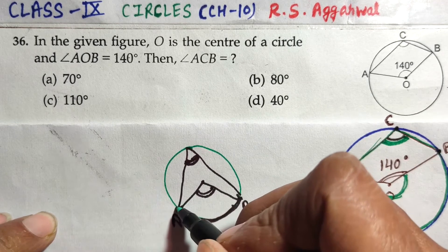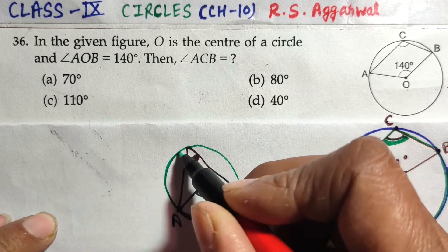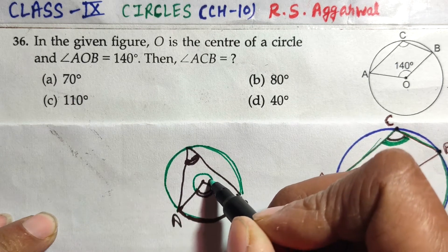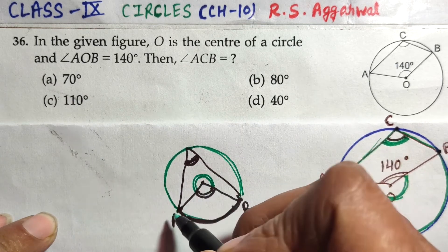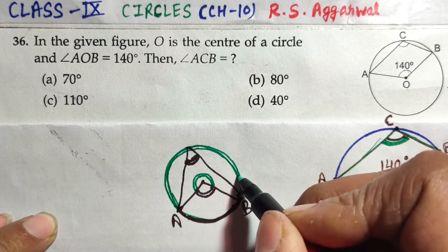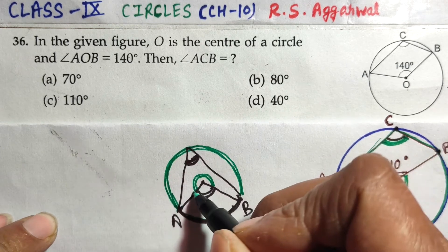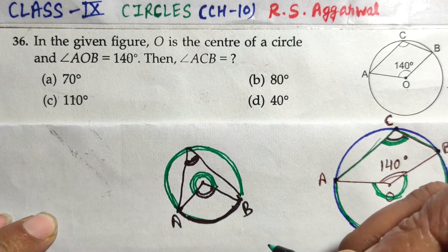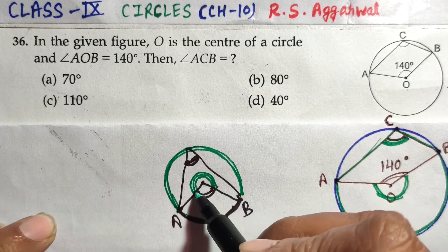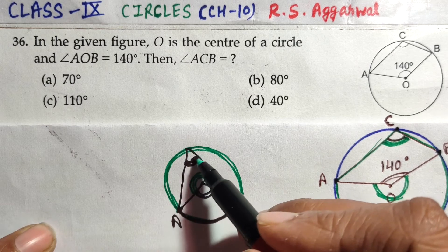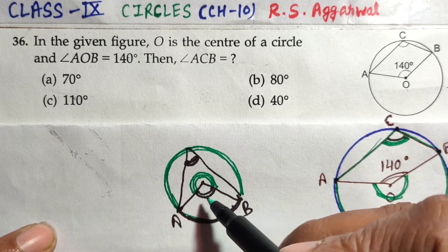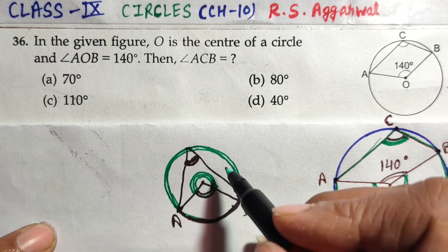Let's understand this concept clearly. If we take arc AB, its shape goes in a particular direction. The center angle corresponding to that arc must be in that same shape, and the boundary angle also in that shape. So by the theorem, the center angle is twice the boundary angle — same arc, same shape, consistently applied.